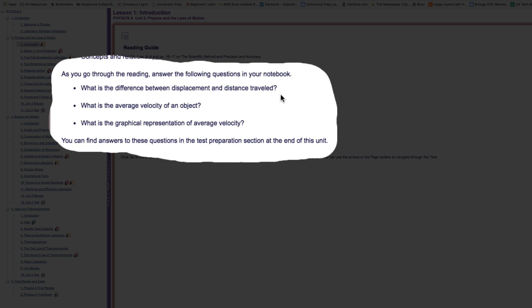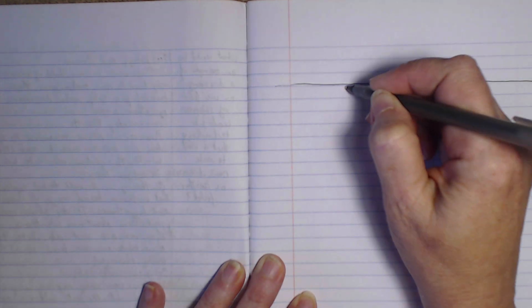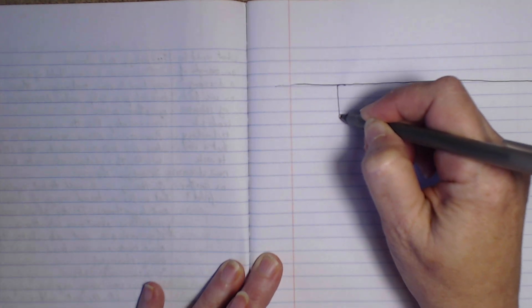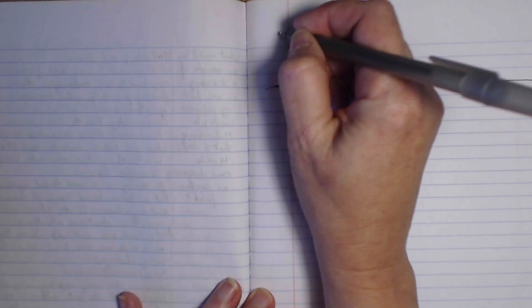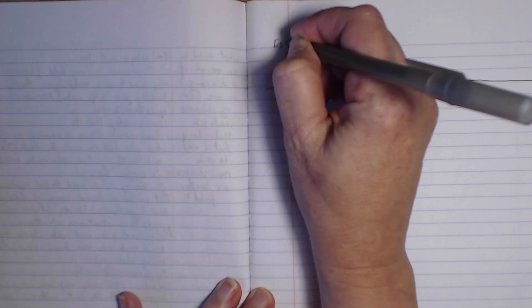So I'm going to start making my Cornell notes by creating a line across my paper here and then one down here. I'm not going to go all the way to the bottom because I'm going to leave a section for my summary. You can use a pre-made sheet to do these if you like, or you can use a notebook just like this.